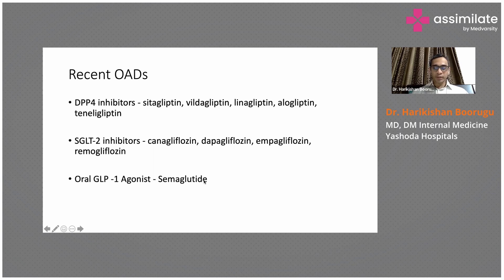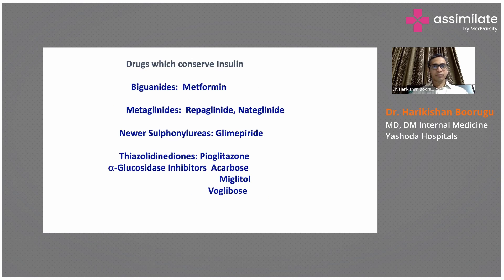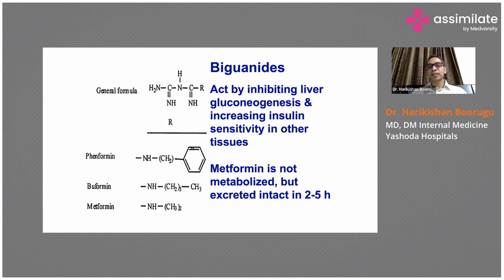We will now go over all these classes of oral antidiabetic agents one by one. We start with biguanides. The only biguanide available is metformin. Metformin acts by inhibiting liver gluconeogenesis and it increases insulin sensitivity in other tissues.